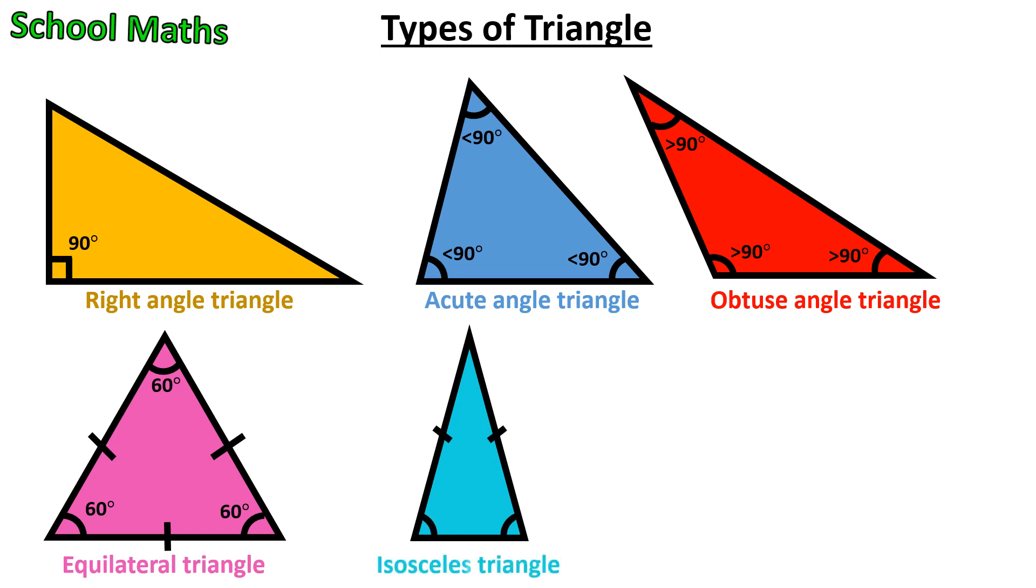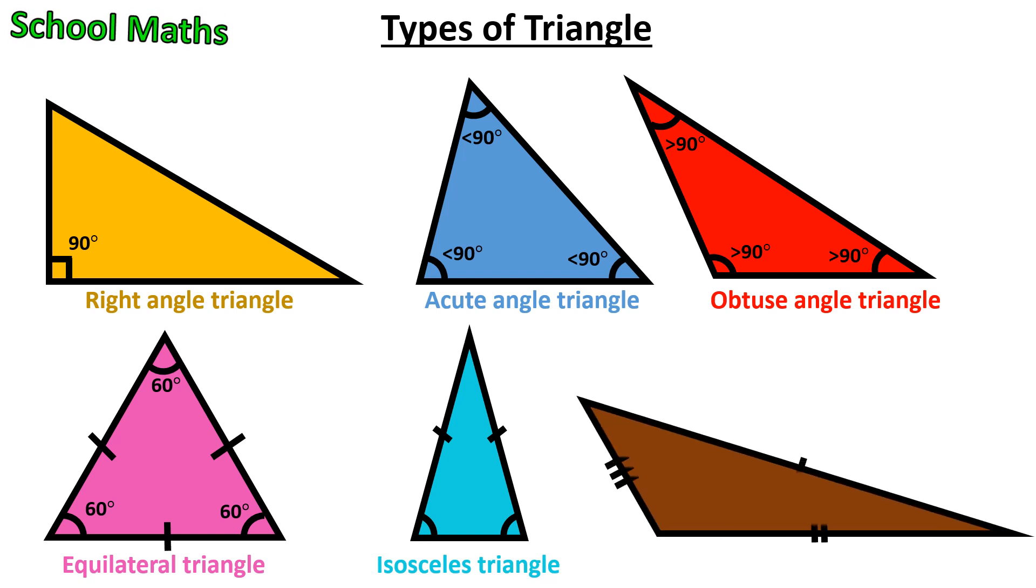Rule for Isosceles Triangle is two out of three internal angles must be the same degree. Rule for Scalene Triangle is all three internal angles are different in this triangle.